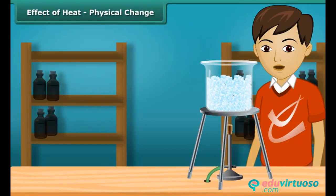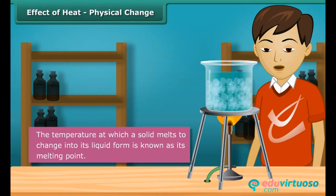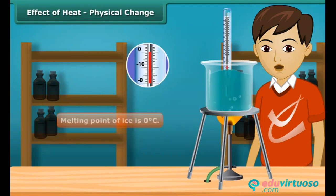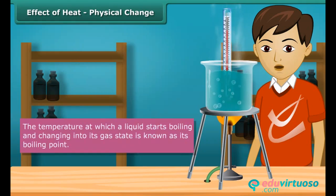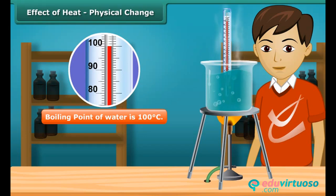Let us now look at how heat affects the change in state. On heating, a solid changes to liquid and a liquid changes to gas. Conversely, on cooling, gas loses heat to change into a liquid, and a liquid loses heat to change into a solid. The temperature at which a solid melts to change into its liquid form is known as its melting point. Melting point of ice is 0 degree Celsius. The temperature at which a liquid starts boiling and changing into its gas state is known as its boiling point. Boiling point of water is 100 degree Celsius.